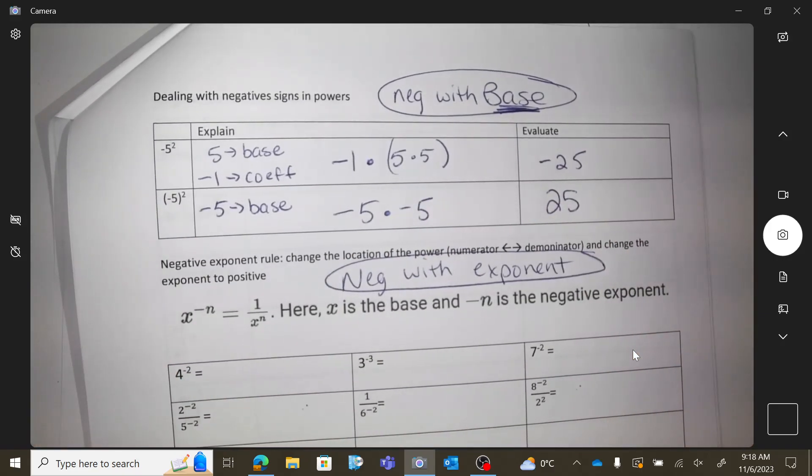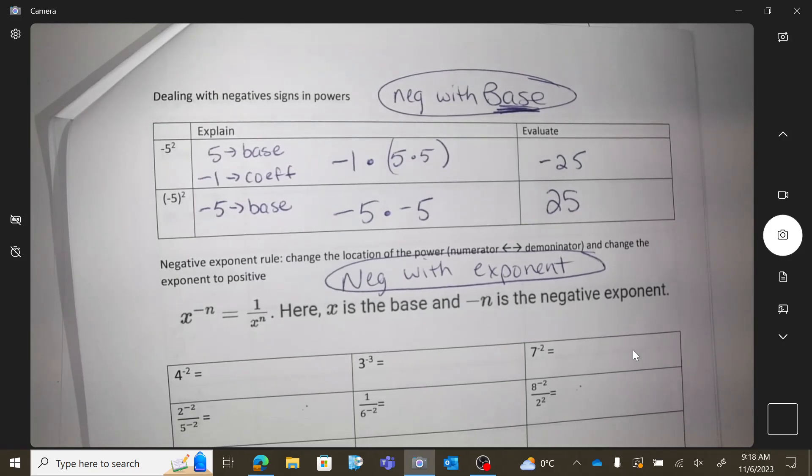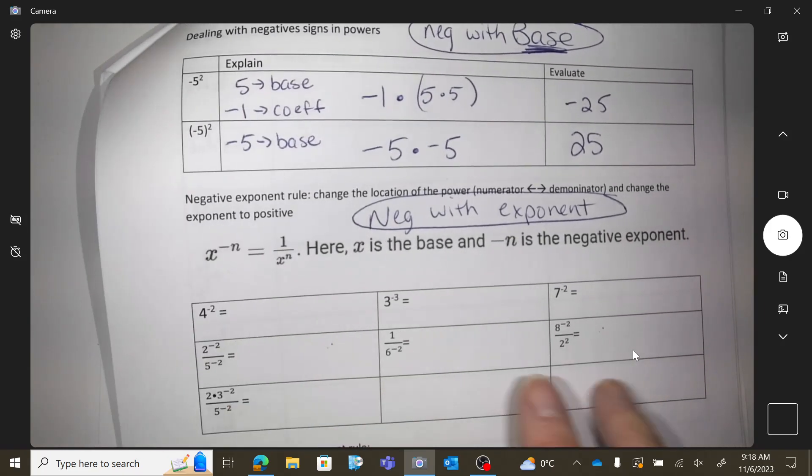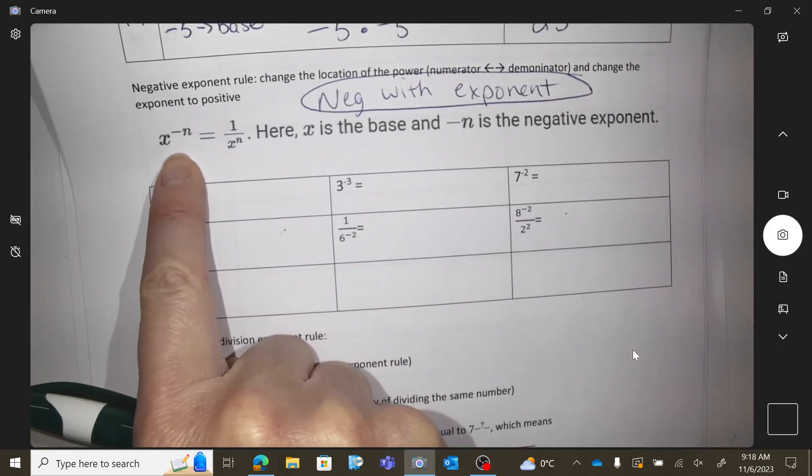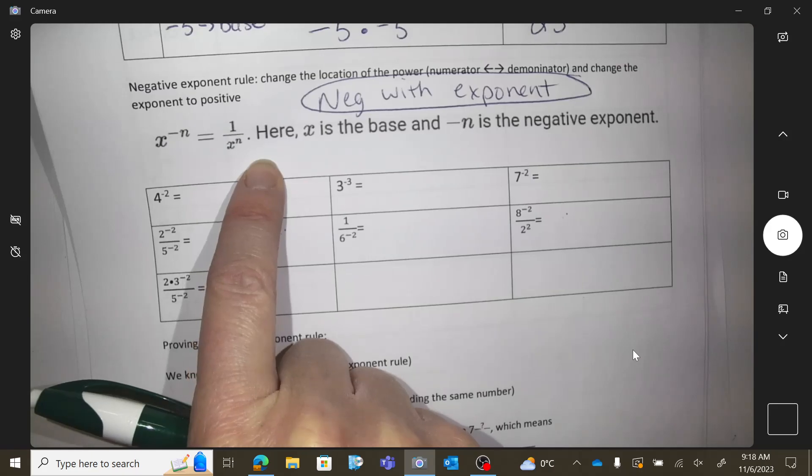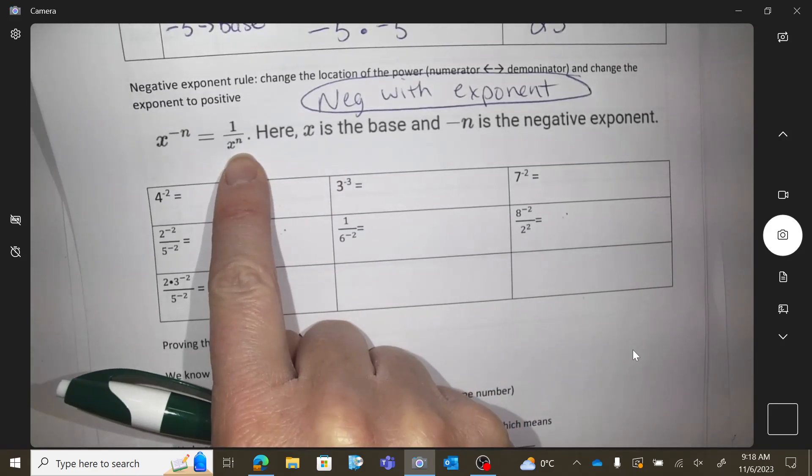Now, this next part is us doing negatives on exponents. Okay, so here's the rule. If you have a base to a negative exponent, you put it to the other location of a fraction, and then you can make it positive.